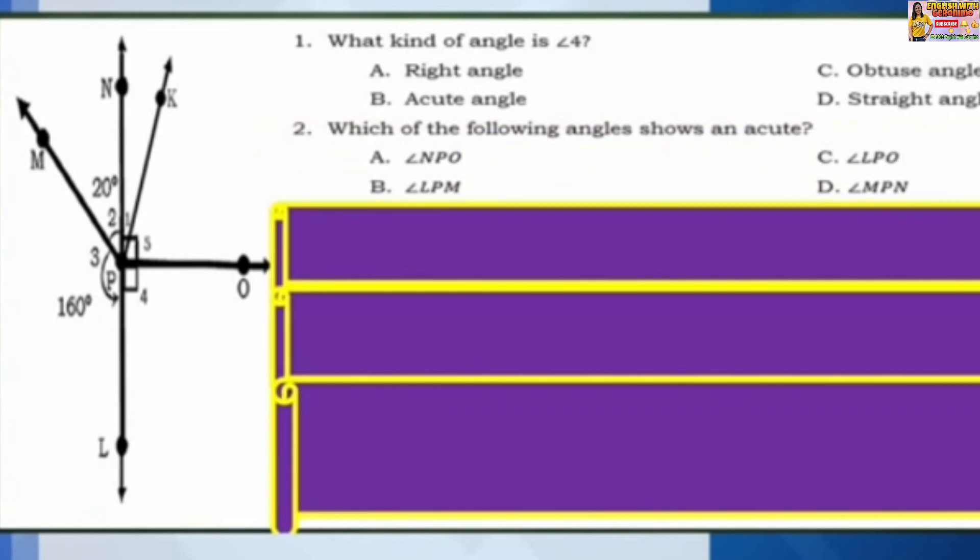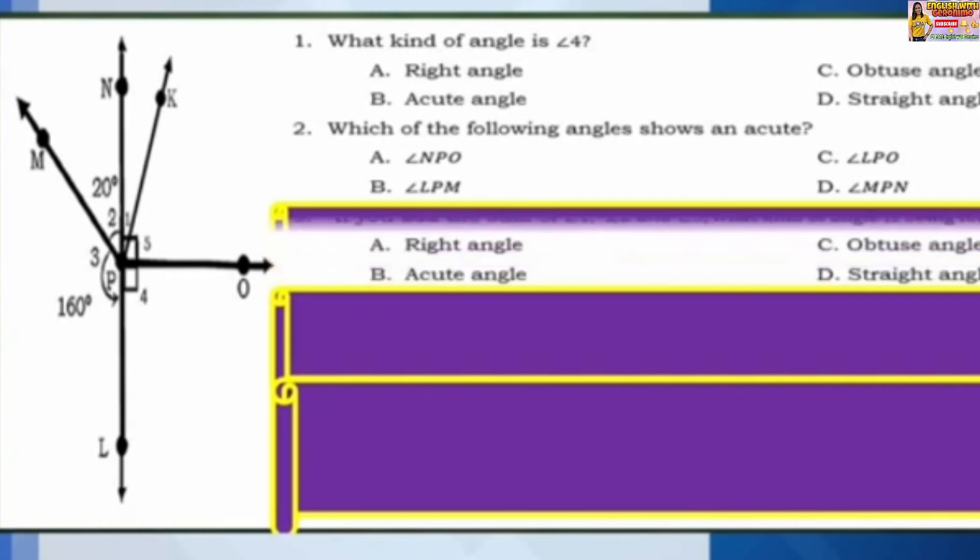Number 2: Which of the following angles shows an acute angle? A: angle NPO. B: angle LPM. C: angle LPO. D: angle MPN.